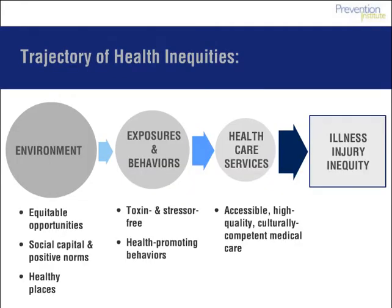First, let's recap the conceptual models from Module 2. The trajectory of health inequities was used to illustrate that the environment has a fundamental influence on inequities in illness and injury. The environment is comprised of both root factors, such as inequality and racism, and community-level factors. The environment influences exposures, behaviors, and the health care services available to a community, and provides a key opportunity and central focus for reducing inequities.